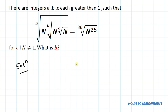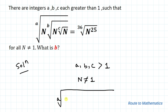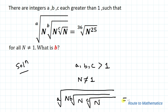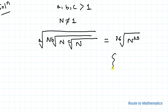We are given that a, b, c are integers greater than 1, and n is not equal to 1. We have the ath root of n multiplied by the bth root of n multiplied by the cth root of n equals the 36th root of n to the power 25. We know the exponential rule that the nth root of a can be written as a to the power 1 by n.